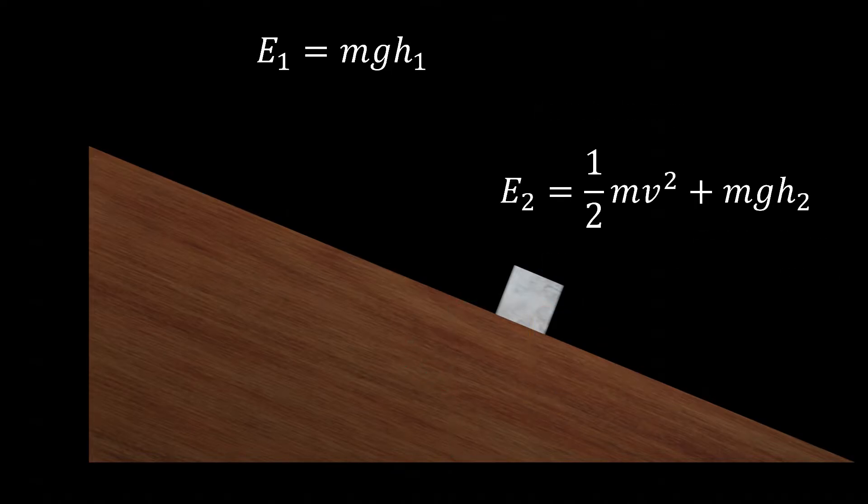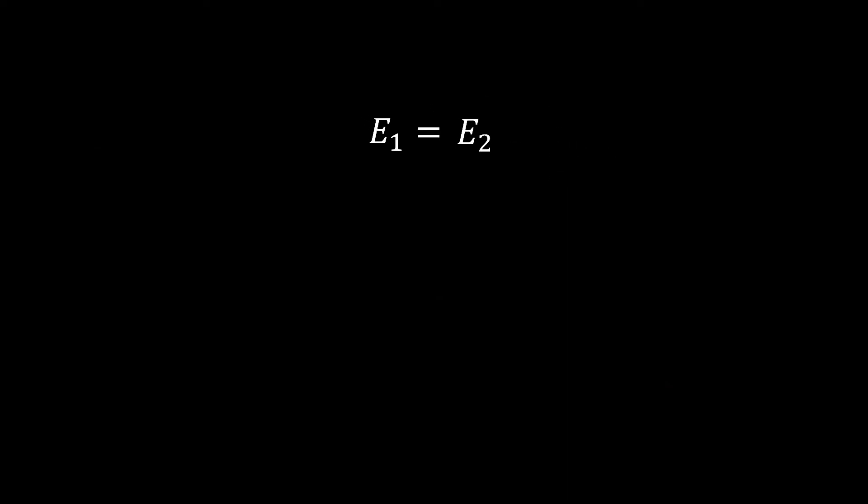Because the energy is conserved, both energies will be equal. Each term in this equation has the mass, m, so we cancel it out. Now, let's subtract over the term gh2 and factor out g.